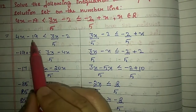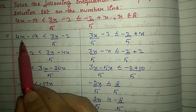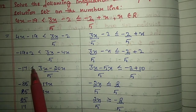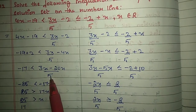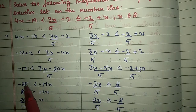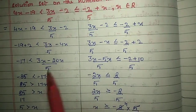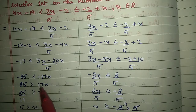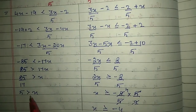Take the first half: 4x minus 19 < 3x/5 minus 2. Shift 4x to the right as minus 4x and shift minus 2 to the left as plus 2, giving minus 17 on the left. Take LCM on the right: (3x minus 20x)/5 = minus 17x/5. Shift 5 across for multiplication: minus 17 times 5 = minus 85. Remove the minus and reverse the symbol: less than becomes greater than. Shift 17 across, giving 5 > x.